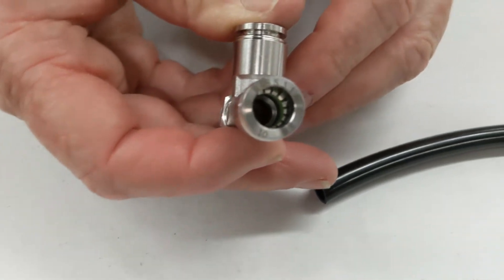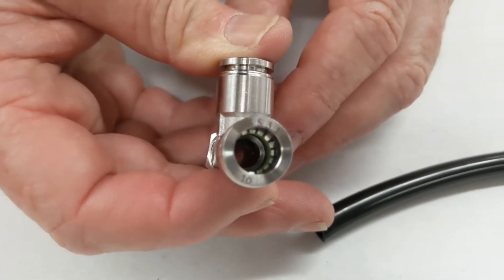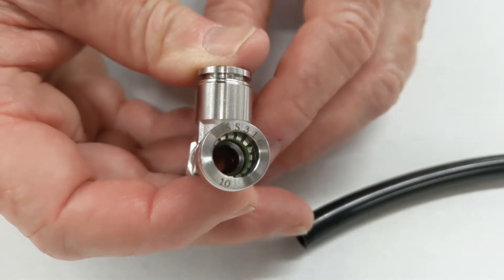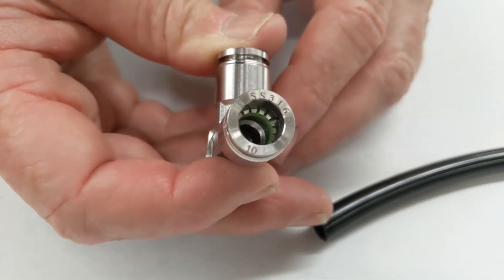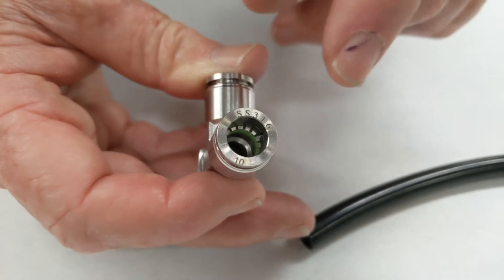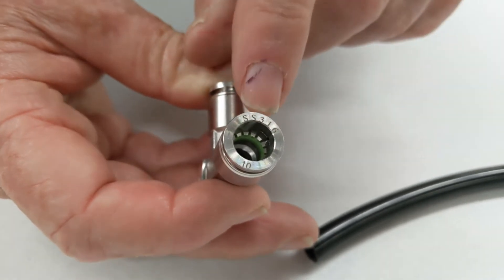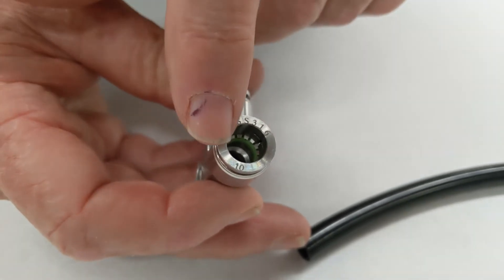Inside there is a green Vyton o-ring and the stainless steel teeth, the collets which grip it. On the outside you've got the stainless steel 316 and the tube size is 10mm in this case.